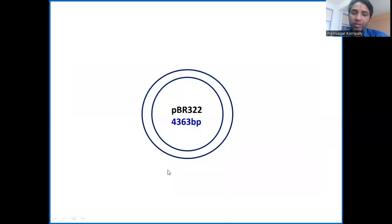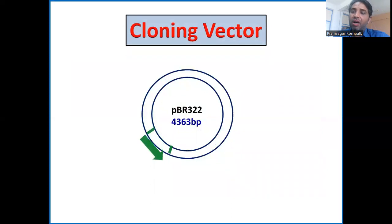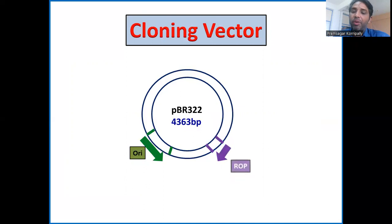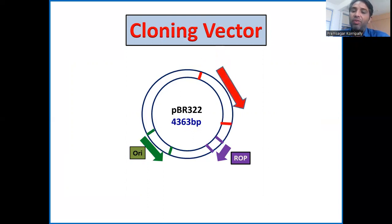pBR322 is a vector whose molecular size is 4363 base pairs. It has five important features. The first is the origin of replication, required for autonomous replication of the plasmid in the host. The second is ROP — Repressor of Primer — required for regulation of the copy number of the plasmid. The third is genetic selection markers.